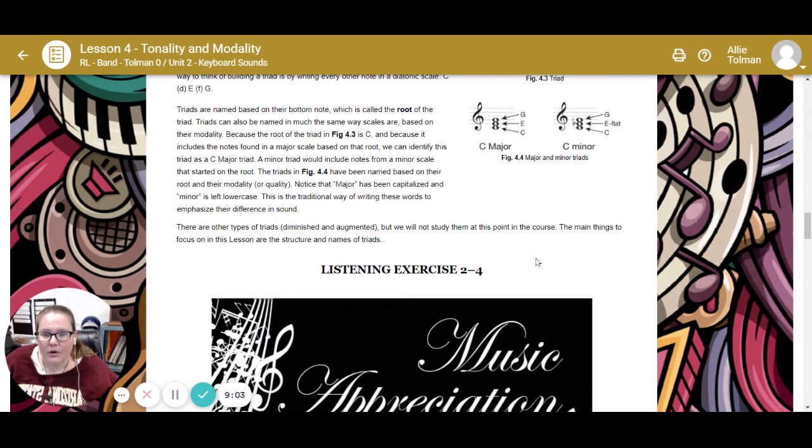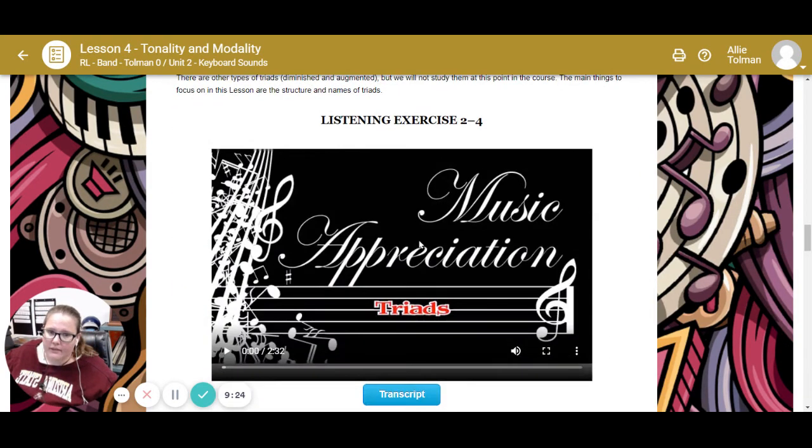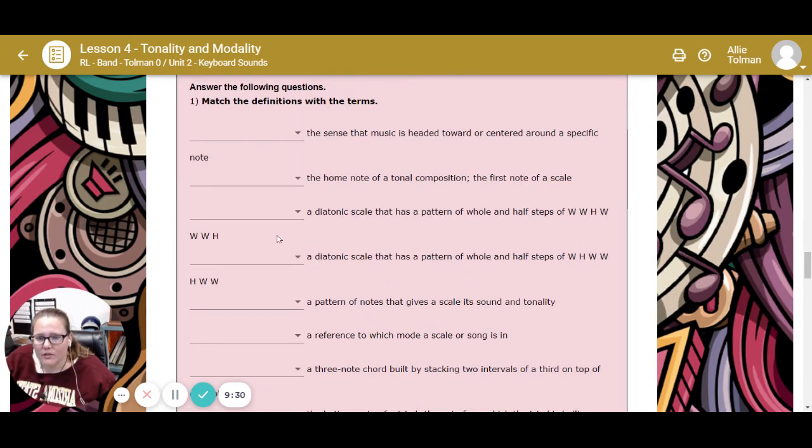There are other types of triads, diminished and augmented, we're going to get into those later. The main things to focus on are the structure and the name of the triads. We have a C major, C-E-G, and a C minor, C-E-flat-G. This is also another listening exercise based on what's above.